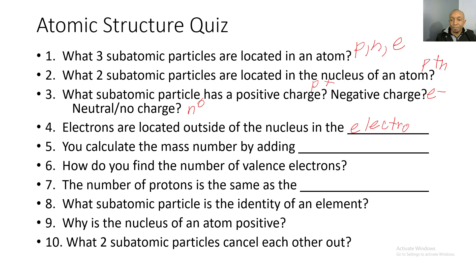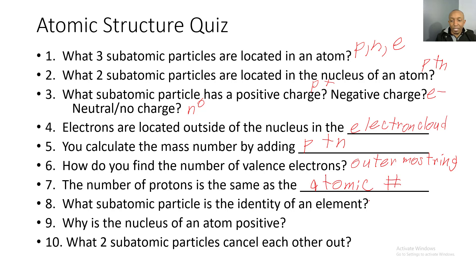Question 4 continued: Electrons are located outside the nucleus in the electron cloud. Question 5: How do you calculate the mass number? Answer: by adding protons plus neutrons. Question 6: How do you find the number of valence electrons? Answer: look in the outermost ring of the electron cloud. Question 7: The number of protons is the same as the atomic number. Question 8: What subatomic particle determines the identity of an element? Answer: the number of protons — if that changes, the element changes. Question 9: Why is the nucleus of an atom positive? Answer: protons have a positive charge and neutrons have no charge, so the overall charge is positive.